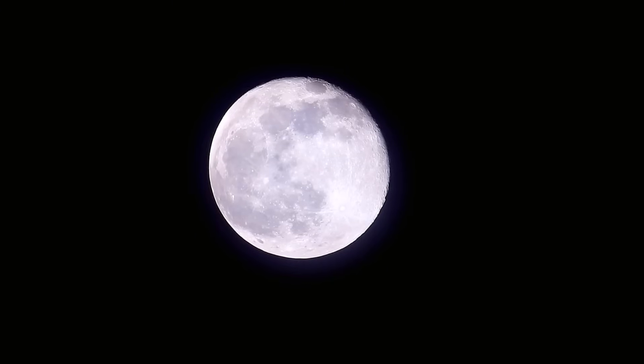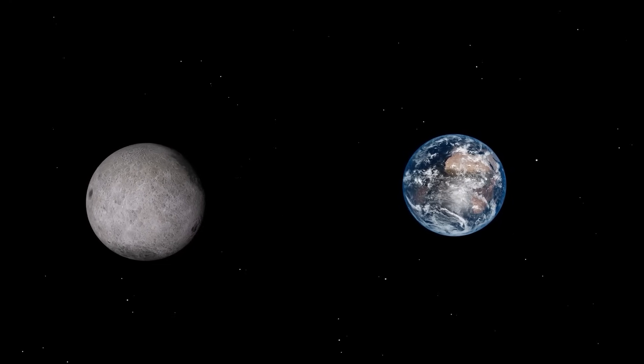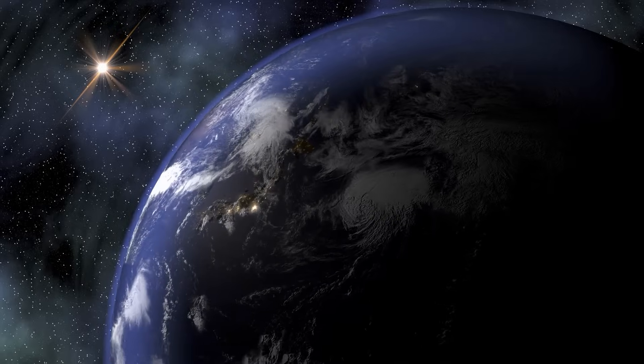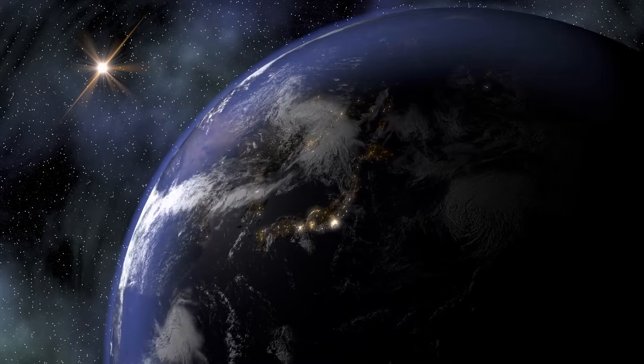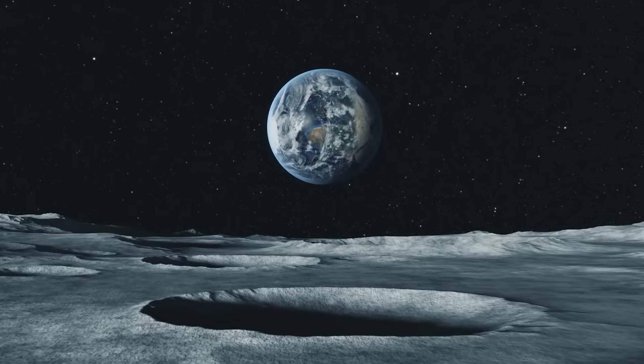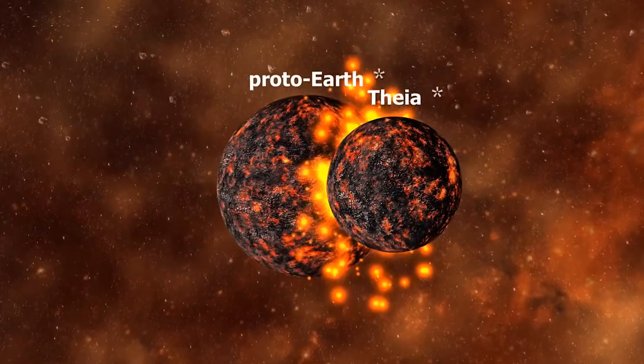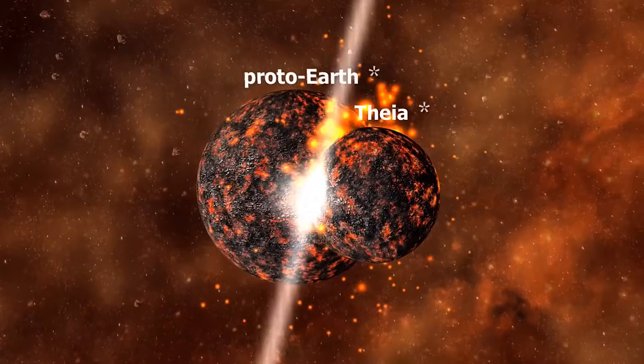But how can we know that today? Well, quite simply by examining the composition of both celestial bodies. More precisely, the isotopic composition of the Earth's mantle and the Moon's rock. Basically, our satellite should consist of around 70% Theia material if the collision theory corresponds to cosmic reality.